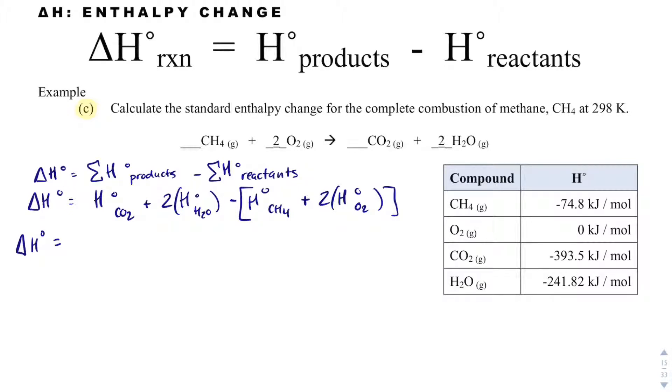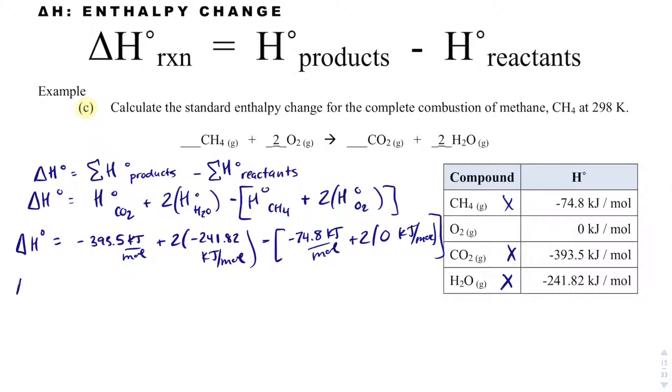The H of CO2 is negative 393.5 kilojoules per mole. The H of H2O is negative 241.82 kilojoules per mole. The H of CH4 is negative 74.8 kilojoules per mole. And then two oxygens, which are zero kilojoules per mole.